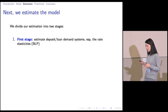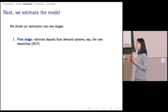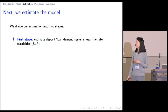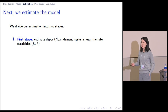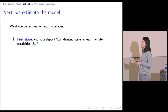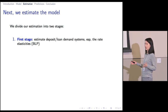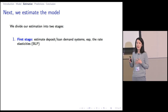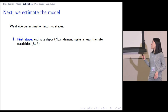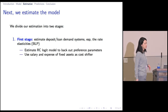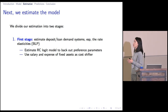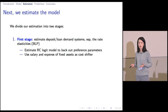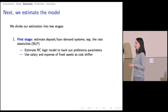So this is the model. Next, we go ahead and estimate it. I divide the estimation into two stages. In the first stage, we aim to estimate the deposit and loan demand system — especially the rate sensitivities that banks face on the deposit and lending market — which is the most direct measure of the market power banks enjoy. To do this, we follow the strategy proposed by Berry, Levinsohn, and Pakes, and more specifically, estimate a random coefficient logit model, using the bank's salary and expense of fixed assets as cost shifters. The identification assumption is that, after controlling for observable features like branch count, borrowers don't directly care about the bank's cost of operation. So these cost shifters influence the bank's ability to make loans without shifting the demand curve, allowing us to trace the slope of the demand curve.